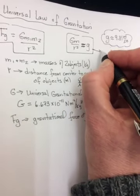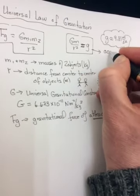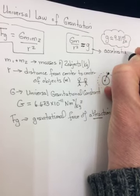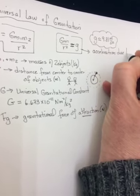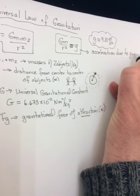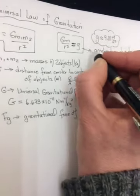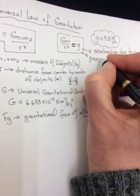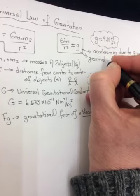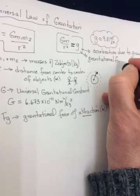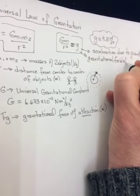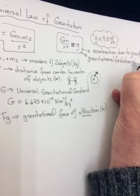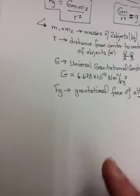This g, we know it as the acceleration due to gravity. It is also something that's called the gravitational field strength. It's just another name for the acceleration due to gravity.